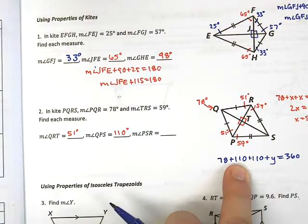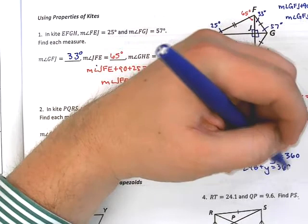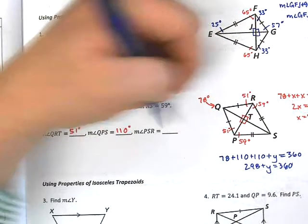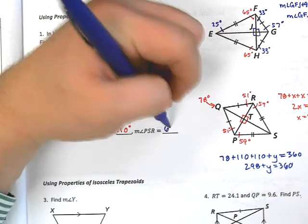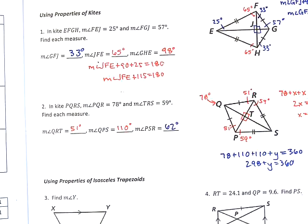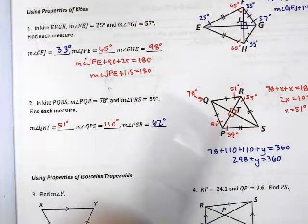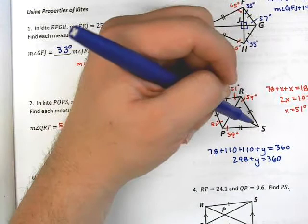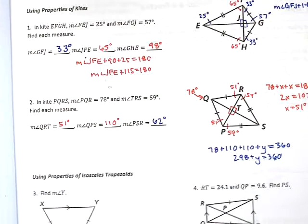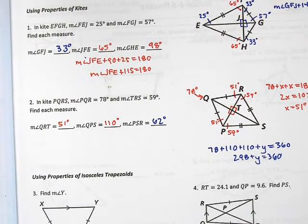Y, that has to equal 360 because it's a quadrilateral. So, let's see here. 220, 298, plus Y is equal to 360, or Y, which is the same thing as PSR, this angle that I'm talking about over here, should be 62 degrees. All right. So, that's if you think about it as a quadrilateral. You could also say, well, you have an isosceles triangle, so 59 plus 59 plus Y is going to equal 180. So, we can go over that more in class if you have questions on it.